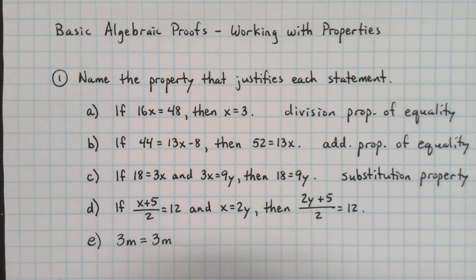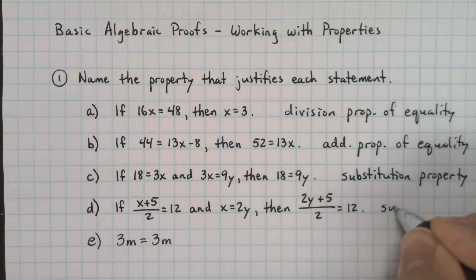Part D. If x plus 5 divided by 2 is equal to 12, and x is equal to 2y, then 2y plus 5 divided by 2 is equal to 12. Same sort of thing has happened right here. We have replaced x with 2y because it says that they're equal. So this is also the substitution property.